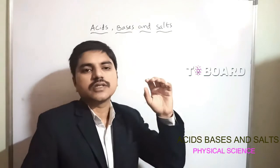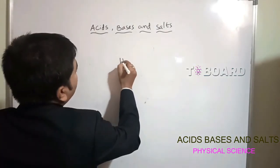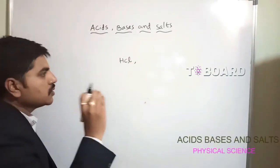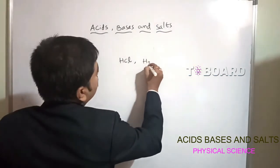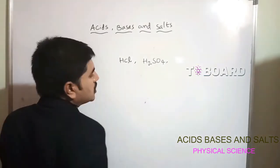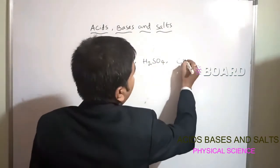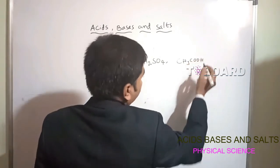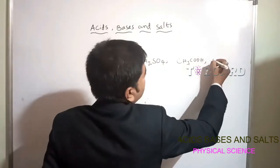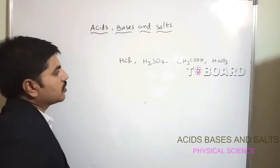To test whether a chemical or substance is an acid or base, we can use hydrochloric acid HCl, sulfuric acid H₂SO₄, acetic acid CH₃COOH, and nitric acid HNO₃. These are the acids we are going to identify.